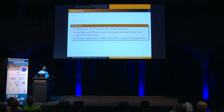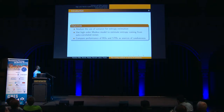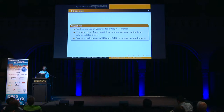Our objectives, to summarize: to analyze the use of variance for entropy estimation, use high-order Markov models to estimate entropy coming from autocorrelated noises, and compare the performance of ring oscillators and STRs as sources of randomness.